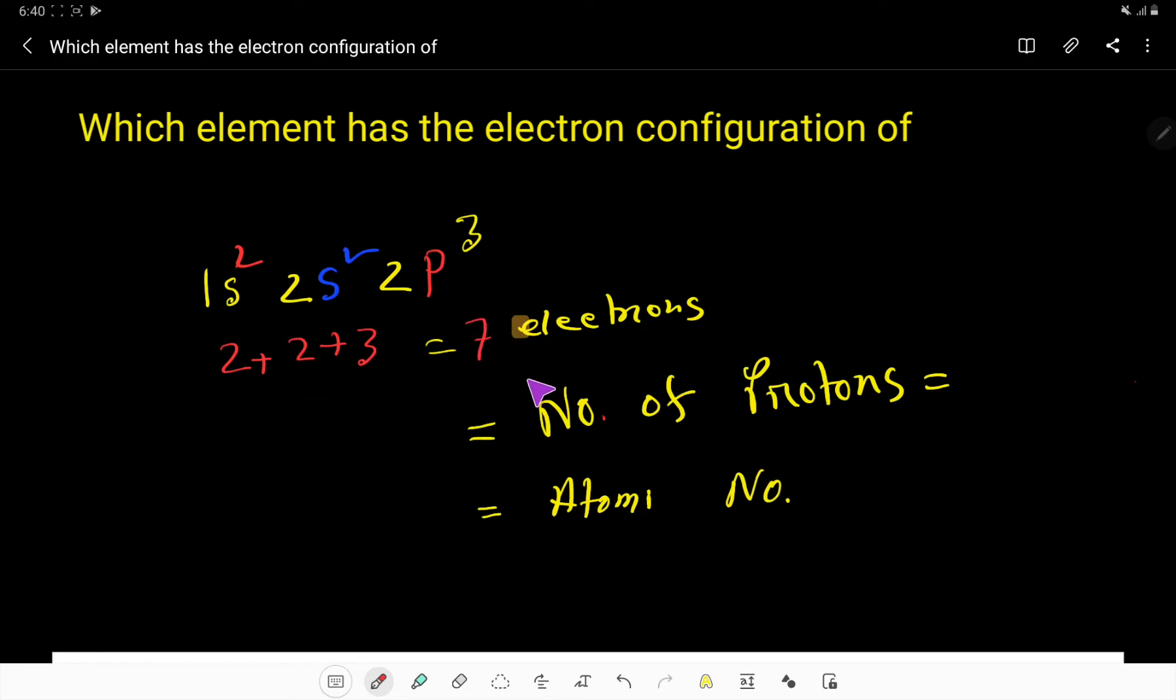This is a neutral element or atom because there is no mention of charge. We know that in a neutral element or atom, the number of electrons is equal to the number of protons. So the number of protons will be 7.